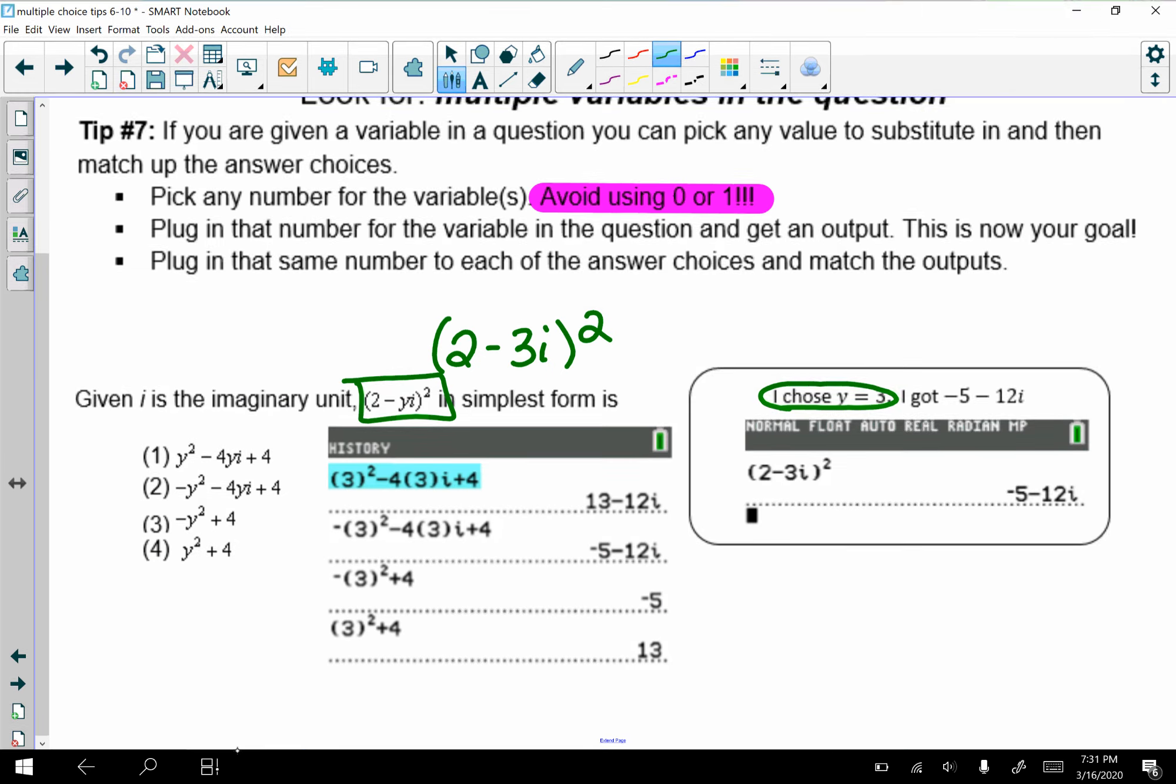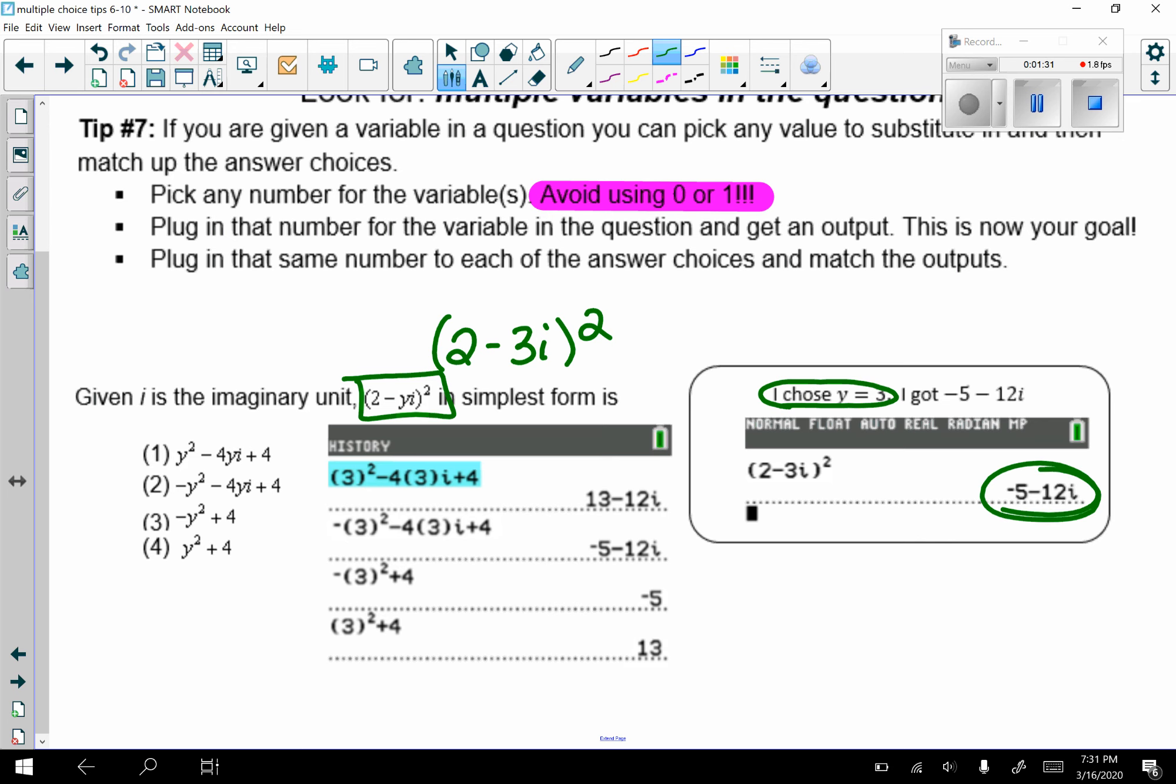So that -5 - 12i is my goal, or if you have taken SAT prep, it's known as your TV or target value. What you're going to do is substitute in 3 for y into each of the answer choices until you get that target value.